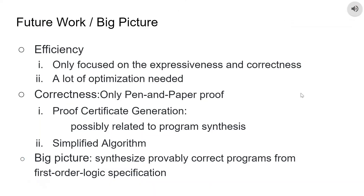We end our presentation with a discussion on future work. Currently, our system only focuses on expressiveness and correctness of the algorithm — it is not efficient at all, and we expect a lot of optimization to be done. Second, our correctness is ensured by a pen-and-paper proof, but this is not convincing evidence that the implementation is correct. To address that, we can either generate proof certificates and a proof-checking algorithm, or simplify our current complicated implementation. The good thing about proof certificates is that they are helpful for our big picture on the Curry-Howard correspondence: to synthesize provably correct programs from specifications using universal quantifiers and implication. Thanks for tuning in. We hope you learned something from this talk. Feel free to share your questions and comments.